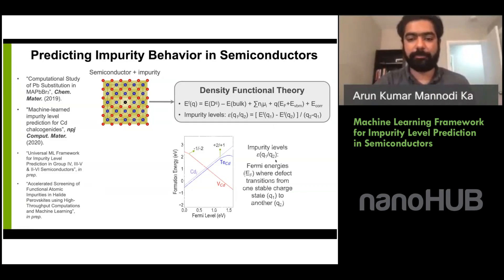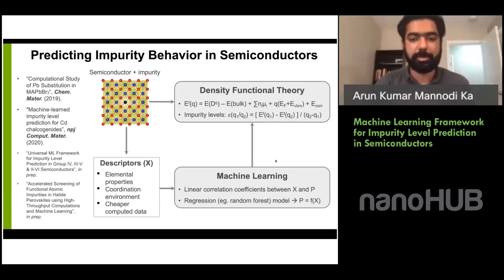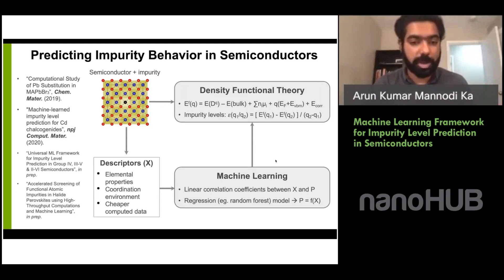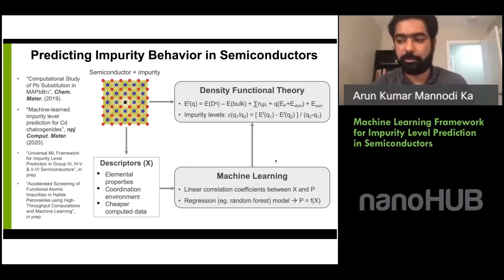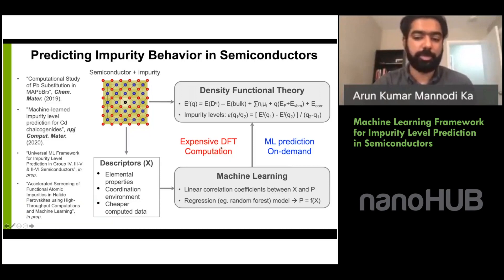To solve this problem, we propose a framework of predicting impurity behavior by combining DFT and machine learning. For a semiconductor in a zinc-blende structure, these equations are solved from DFT to get the formation energy of an impurity as a function of charge Q, chemical potential mu, and Fermi level E_F, with a correction energy term for periodic interaction between charges. The key outputs are plots of formation energy versus Fermi level, where slope changes indicate impurity transition levels.